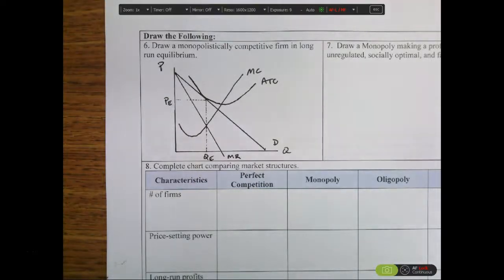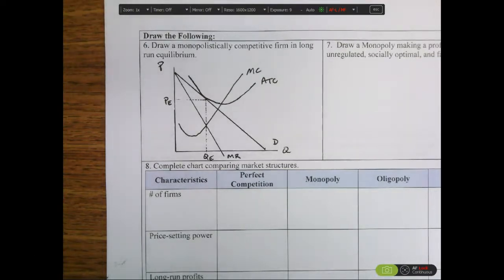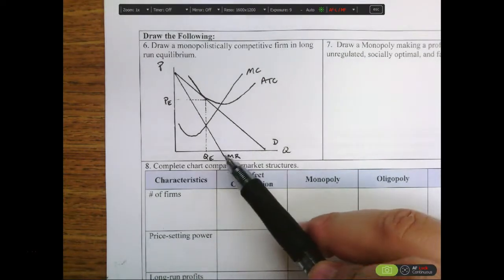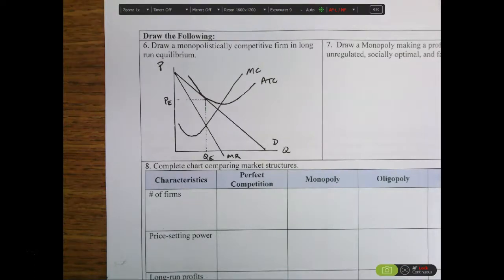This section is looking at drawing a monopolistically competitive firm in long-run equilibrium, and we can see that the monopolistically competitive firm looks a lot like a monopoly. It's got a downward-sloping demand curve, marginal revenue curve, but it also has some characteristics of a competitive firm as well.